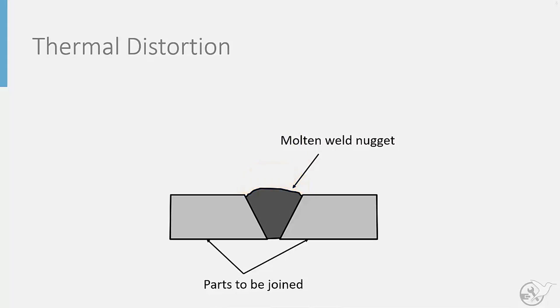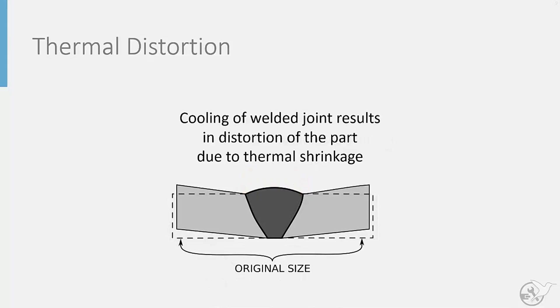When the joint cools, the weld will then shrink, pulling the parts together and causing potential distortions in the shape of the overall joint. Such distortions can pose a real challenge when trying to assemble hundreds of parts together that all need to precisely fit.